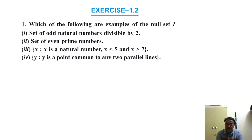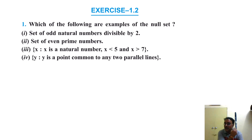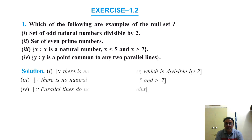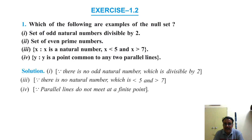The set of points common to any two parallel lines — parallel lines never intersect, even when extended indefinitely in both directions. So there is no common point, and this is also an empty set. Therefore, options (i), (iii), and (iv) are empty sets.